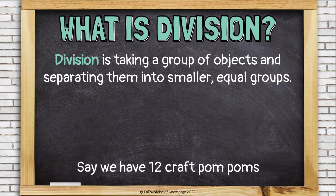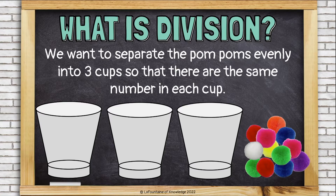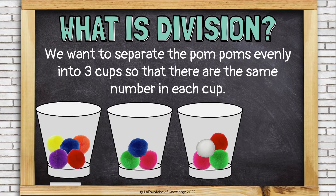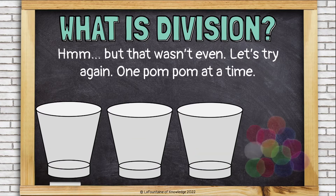Say we have 12 craft pom-poms. We want to separate the pom-poms evenly into three cups so that there are the same number in each cup. But that wasn't even — I have five in one cup, three in another, and four in the last cup. Let's try again, one pom-pom at a time.